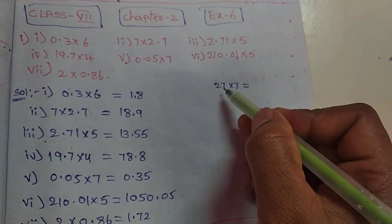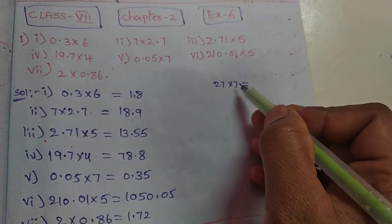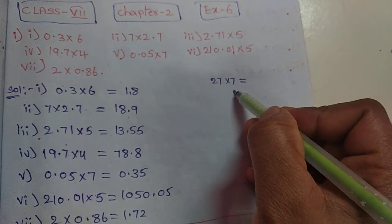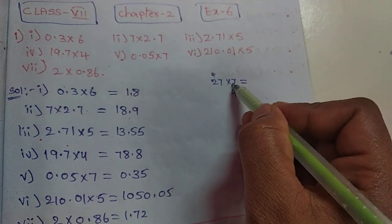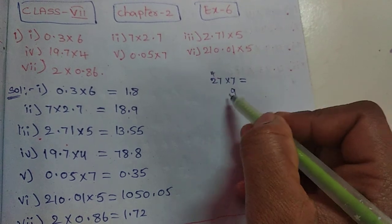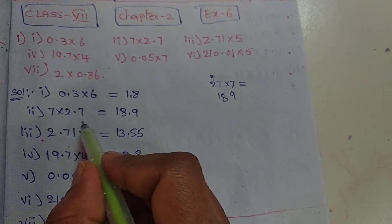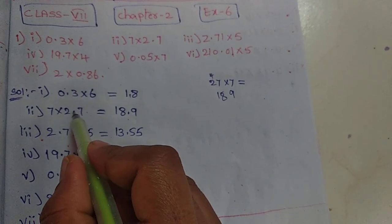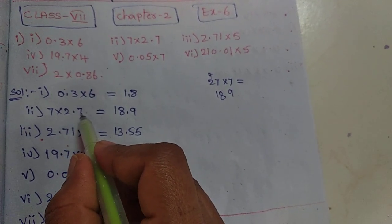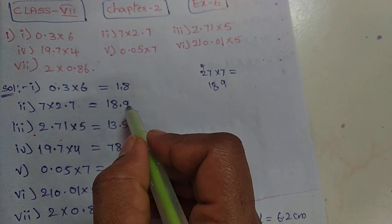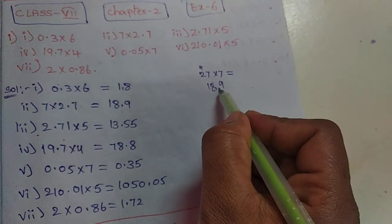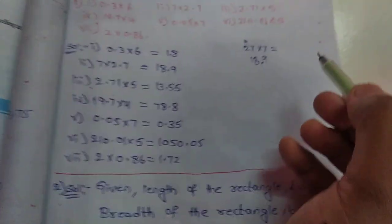Next, 7 into 2.7. We should use this step. 2.7 into 7: 7 times 7 is 49, and 7 times 2 is 14. 14 plus 4 is 18, so 189. The decimal point here, we check this step and count one digit from the right side. So the answer is 18.9.